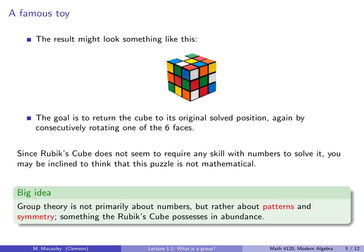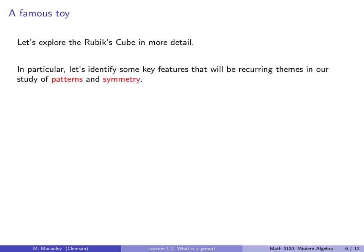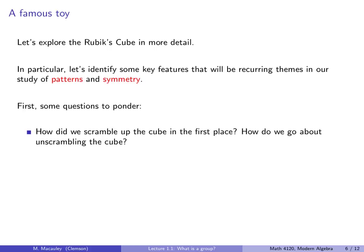So let's explore the Rubik's cube in a little more detail, particularly let's identify some key features that will be recurring themes in our study of patterns and symmetry. So here are some questions that I want you to ponder. First of all, how did we scramble up the cube in the first place, and how do we go about unscrambling it? There are some sort of rules that you have to have, and things that, what counts as a move and what doesn't count as a move.